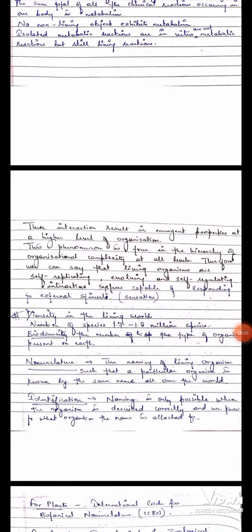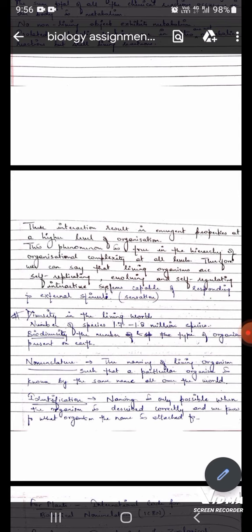Now let's come on the topic diversity in the living world. There are almost 1.7 to 1.8 million species in the world which are discovered till now. There are three more terms which is biodiversity, nomenclature and identification. We need to study about it. First will come on biodiversity. The number and the type of organisms present on earth are known as biodiversity.